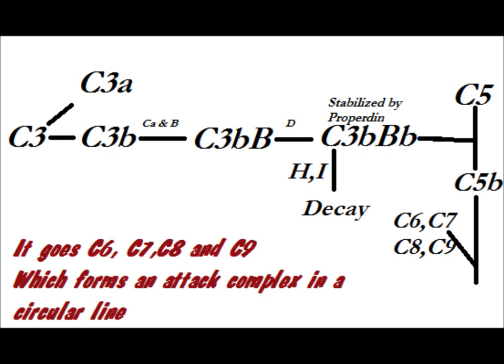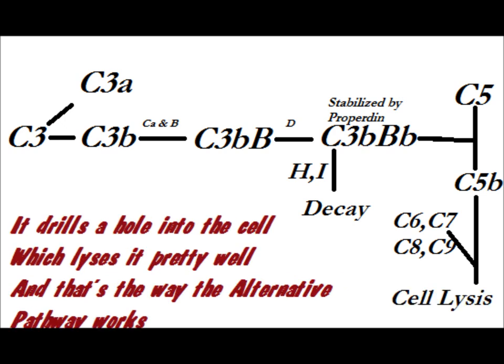It forms a MAC complex in a circular line. Oh, it drills a hole into the cell, which lyses it pretty well. And that's the way the alternative pathway works.